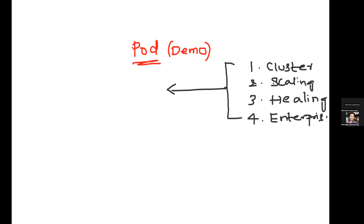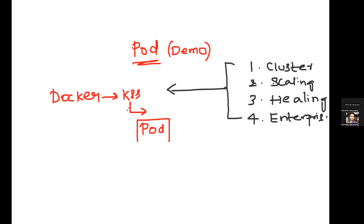We are moving from Docker to Kubernetes — that is, moving from containers to a container orchestration environment. In Kubernetes, the lowest level of deployment is a pod. You cannot directly deploy a container the way you do in Docker. In Docker, you build a container and deploy a container. In Kubernetes, we still use those same containers, because whether it's Kubernetes or Docker, the end goal is to deploy your applications in containers.